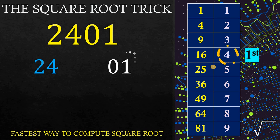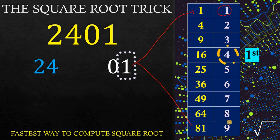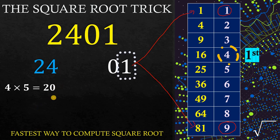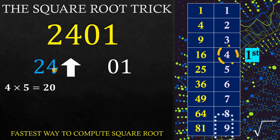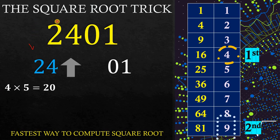Now how about the second digit? We use the last digit which is equal to 1. There are 2 perfect squares that end in 1: we have 1 that corresponds to 1, and also 81 that corresponds to 9. So which one — is it 1 or 9? To answer this, we need to multiply 4 by 5. So 4 times 5 gives us 20. Now 24 is greater than 20. Therefore, we need to choose the larger digit which corresponds to 9. Therefore, the square root of 2,401 is equal to 49.